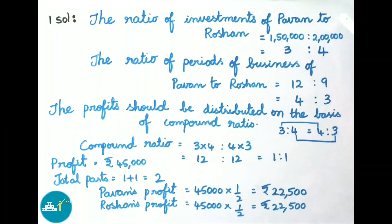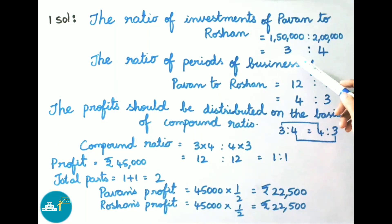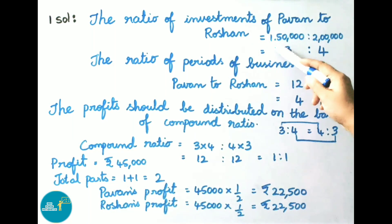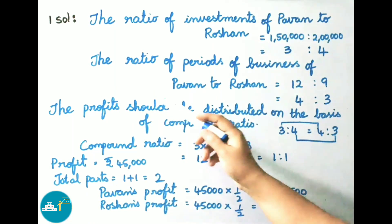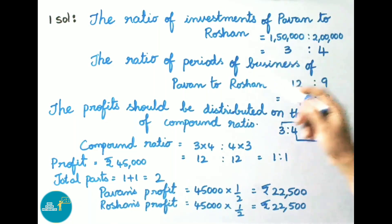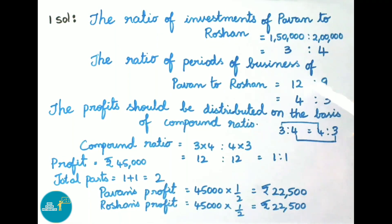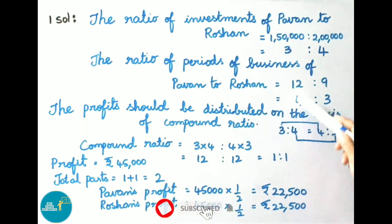The ratio of investments of Pawan to Roshan is 1 lakh 50,000 to 2 lakhs. Dividing both terms by 50,000, the ratio is 3 is to 4. Next, the ratio of periods of business of Pawan to Roshan is 12 months to 9 months. Dividing both terms by 3, the ratio is 4 is to 3.